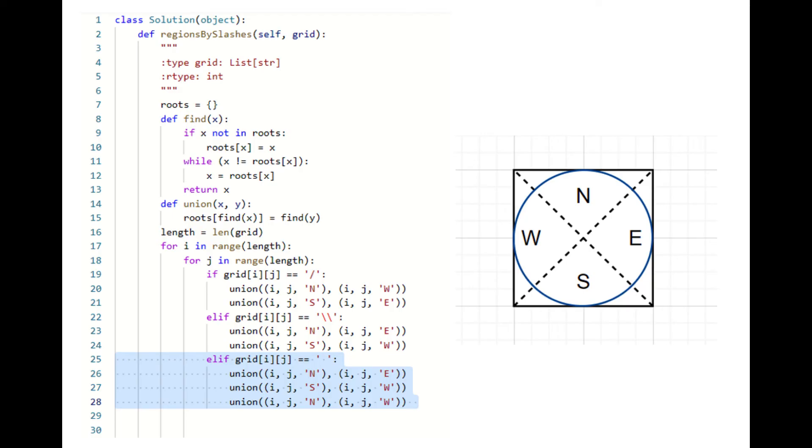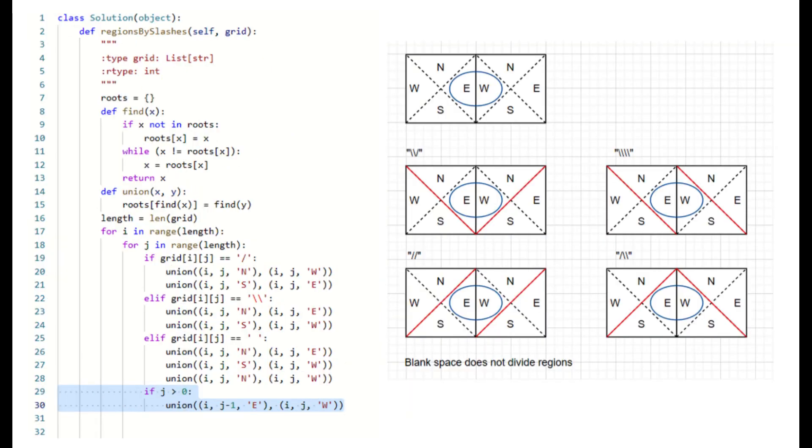Else, if the character is blank space, we connect four regions together. We know that for two horizontally adjacent squares, the east region of the left square will always be connected to the west region of the right square no matter what the combination of the character is.